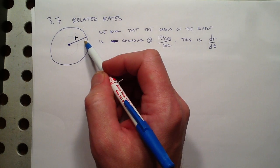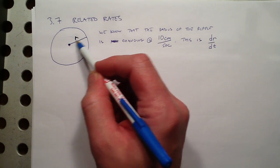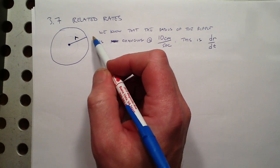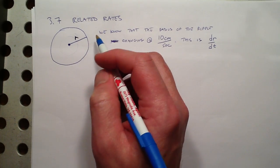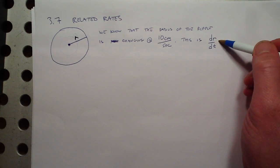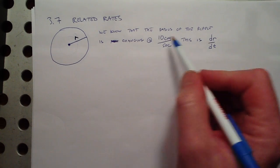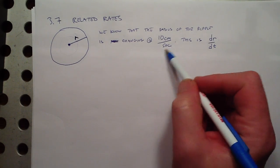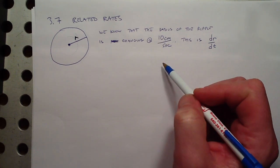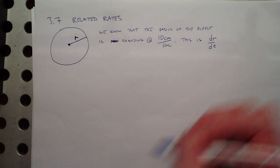So when you throw the rock in the pond, the ripple gets bigger and the radius might be growing — it has like a velocity; it's changing at 10 centimeters per second. In terms of calculus, this is a derivative, this is a rate. Anything that's a rate can be understood as a derivative. It's the derivative of the radius with respect to time, dr/dt — just as if it were position, dx/dt is velocity. So this is dr/dt.